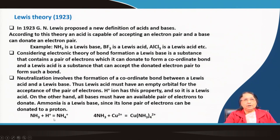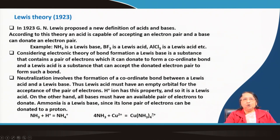For example, ammonia can combine with H⁺ (proton) to form ammonium ion — this is coordinate bond formation. Similarly, Cu²⁺ copper ion can combine with ammonia molecules to form the complex [Cu(NH₃)₄]²⁺. This is also a type of bond formation and can be explained very nicely by Lewis theory.